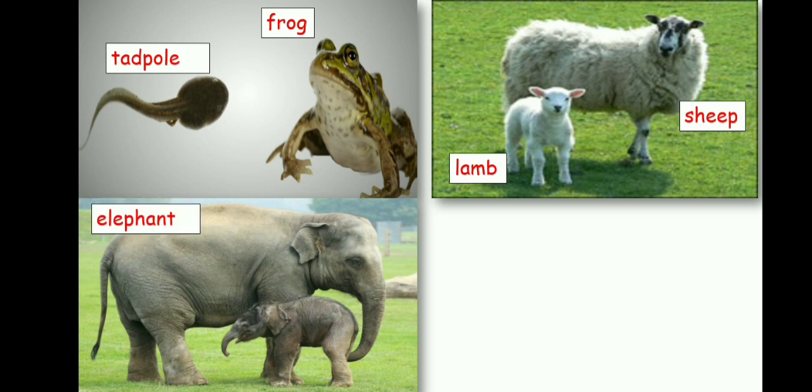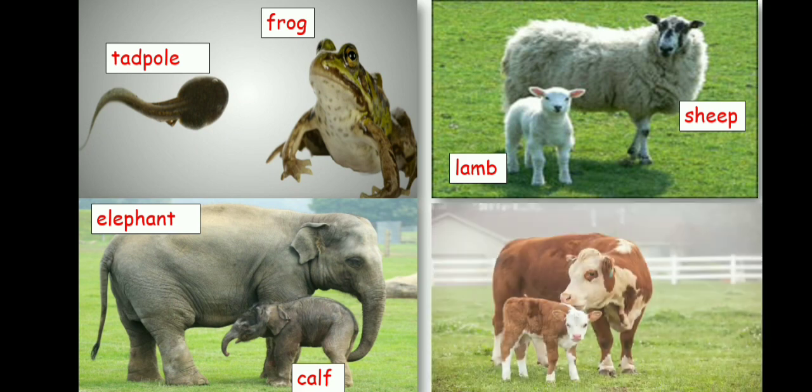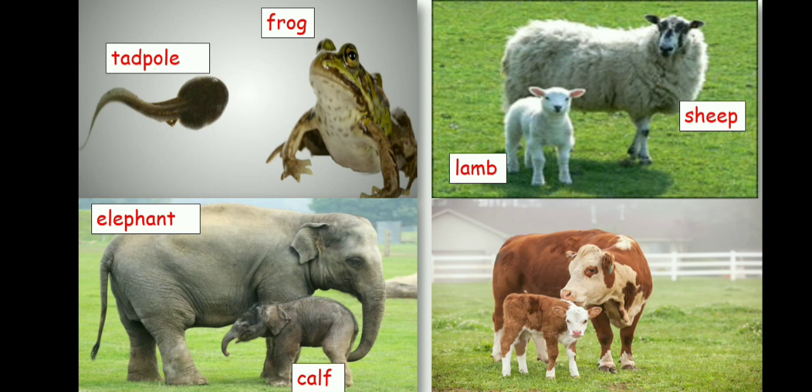This is an elephant and the young one of an elephant is called a calf. This is a cow and the young one of a cow is called a calf. So the elephant and the cow, both their babies are called calf.